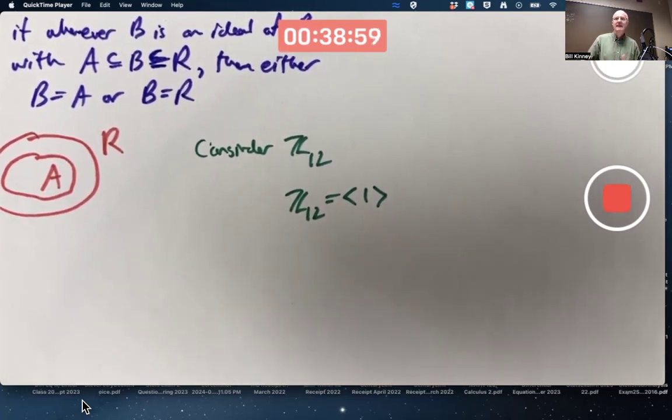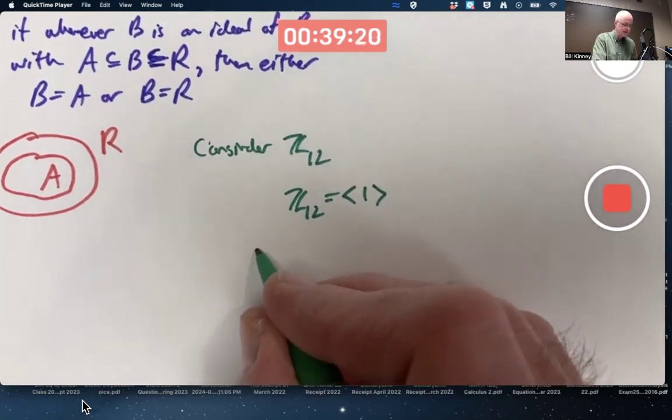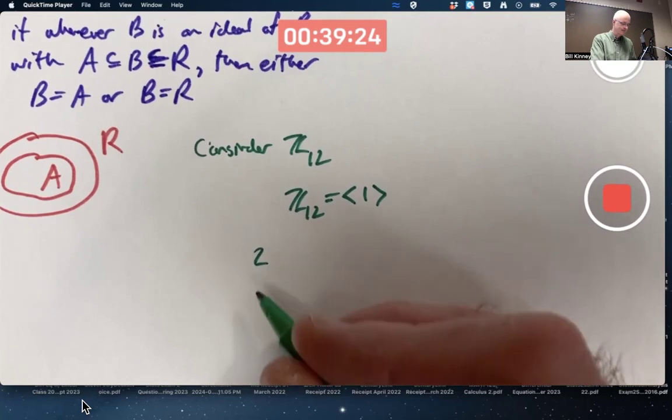What's the next biggest subgroup of Z12? It would contain six elements, right? Think about Lagrange's theorem. Z12 has 12 elements, 0 through 11. 6 divides 12. We also have the fundamental theorem of cyclic groups. There's a cyclic group of order 6. It would be generated by 2.